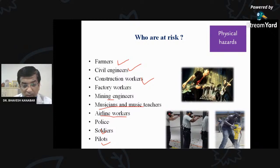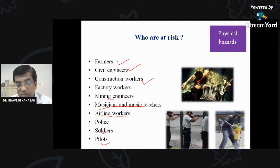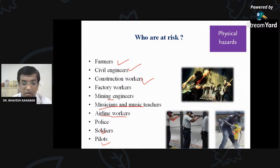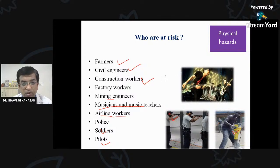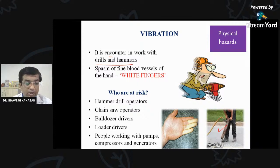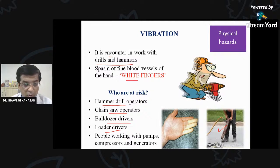You can see in the photograph that this machine generates lots of noise as well as vibration. Vibration and noise is generated by this drilling machine that cuts rods and makes holes. Gun shooters are also exposed to noise — you can see they wear earmuffs. Vibration is encountered in drilling work. Workers at risk include drill operators, chainsaw operators, bulldozer drivers, loader drivers, and workers with pumps and compressors. This can lead to vibration white finger — a spasm of fine capillaries and blood vessels.